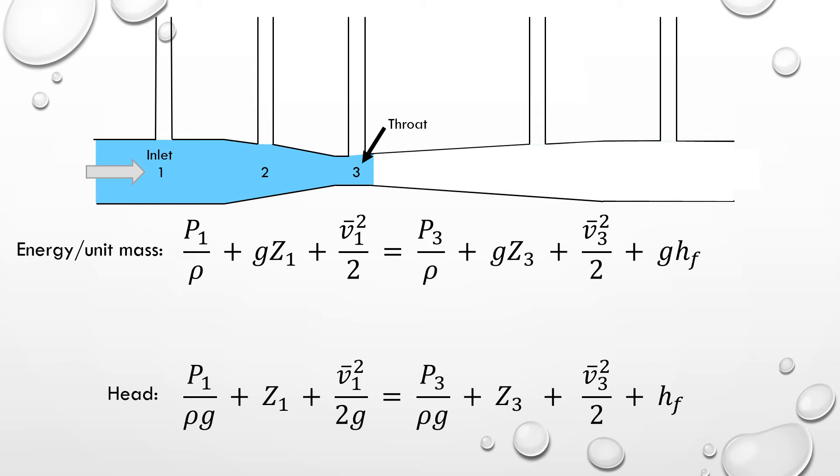Let's apply the mechanical energy balance between the inlet and the throat of the venturi meter. Between these points, the frictional loss is negligible compared to other energy changes, so we can remove the frictional loss or frictional head term from the equation.